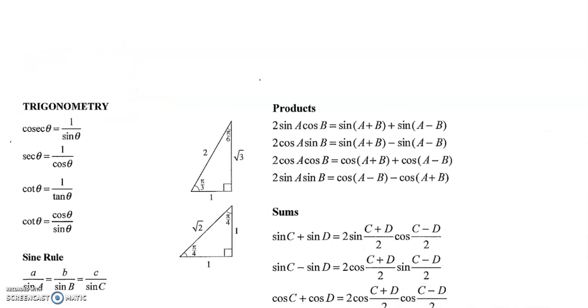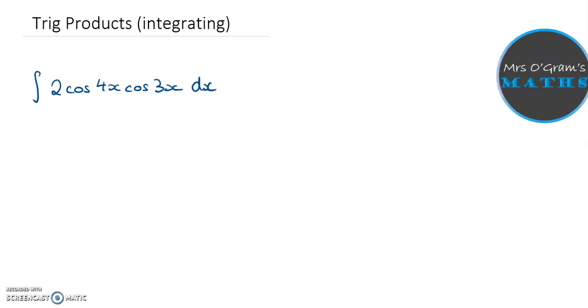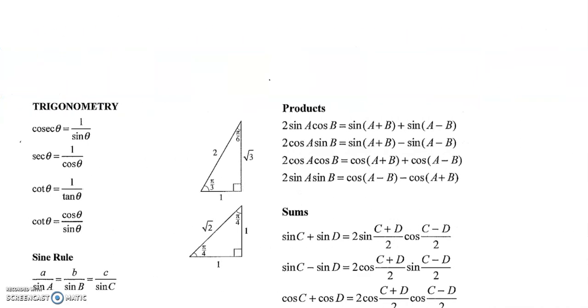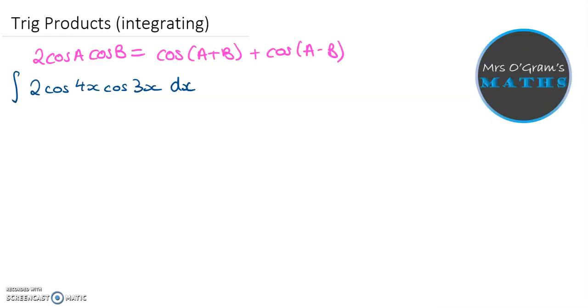So if we take a look over at the formula sheet, we've got these products here where we've got sine cos, cos cos, cos sin. So we compare it to what we've got. We've got a cos cos. So if we look for a cos cos, we've got this one just here. So I'm just going to go rewrite that next to our question.